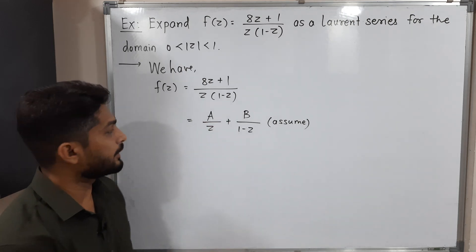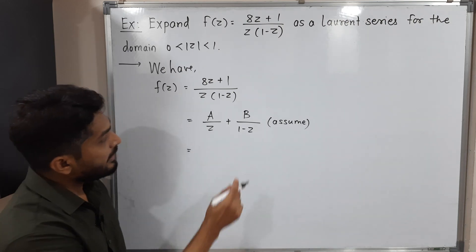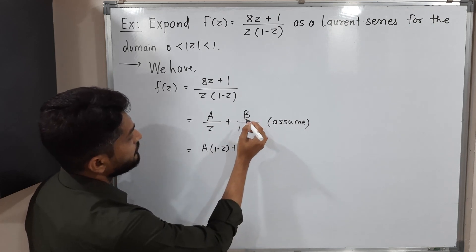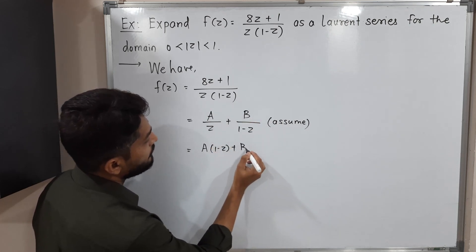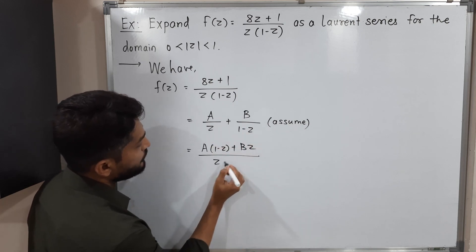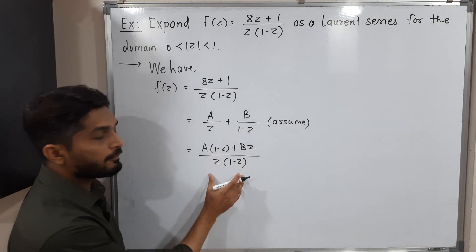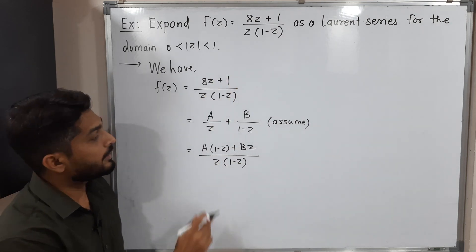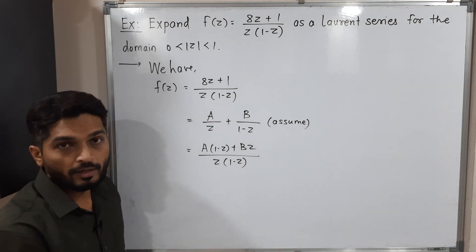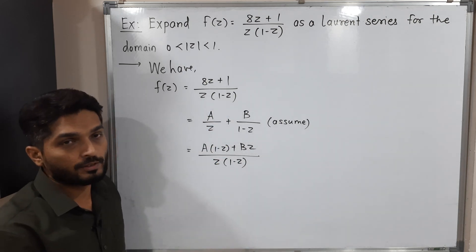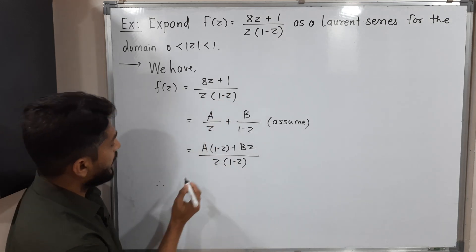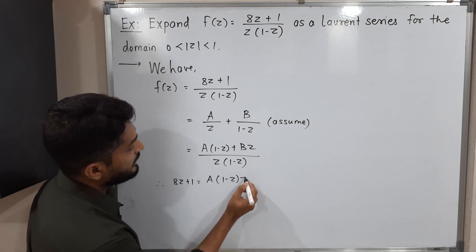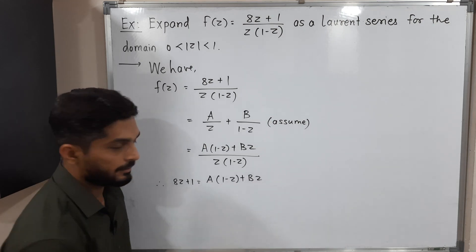Our target is to find the values of A and B. We cross multiply: the numerator becomes A(1 - z) + Bz, with the denominator being the product of both terms. Since the expressions are equal, their denominators cancel and we can equate numerators.